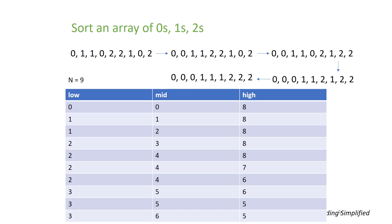Welcome to Coding Simplified. Today we will see a new problem involving an array. We are given an array of 0s, 1s, and 2s and our aim is to sort it. The sorted output should have all 0s first, then all 1s, then all 2s. For example, if the input is 0, 1, 1, 0, the output should have all 0s first, then all 1s, then all 2s.